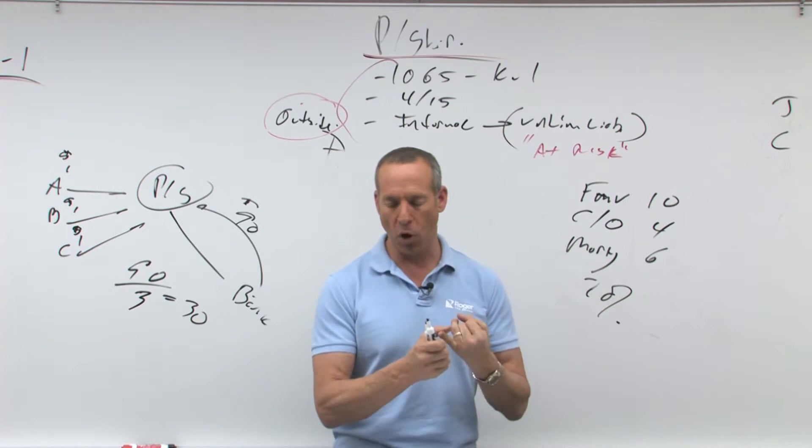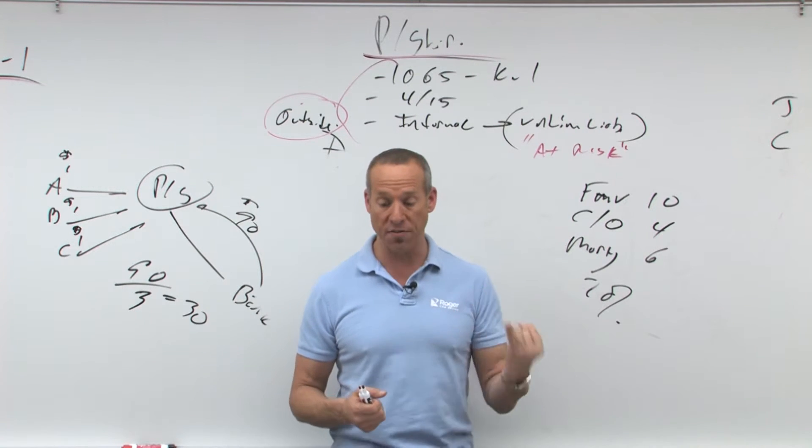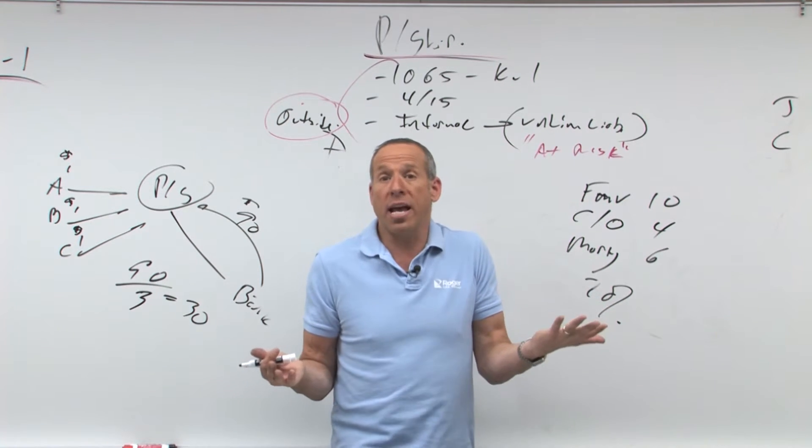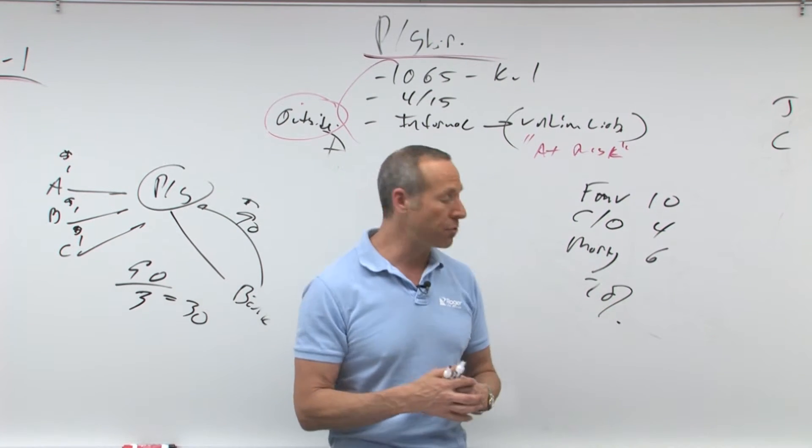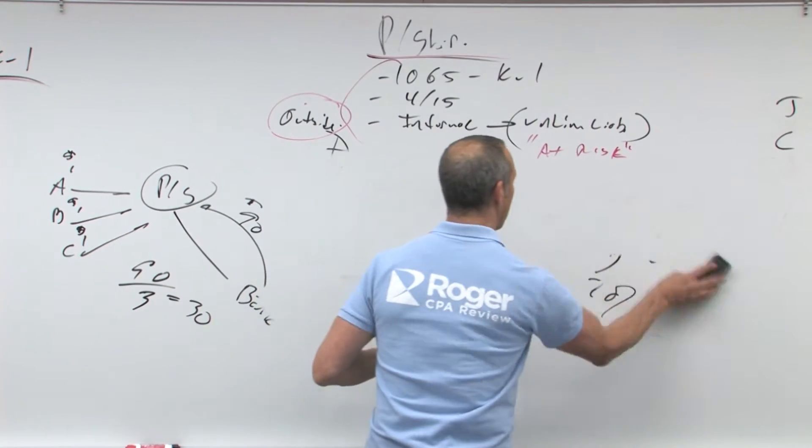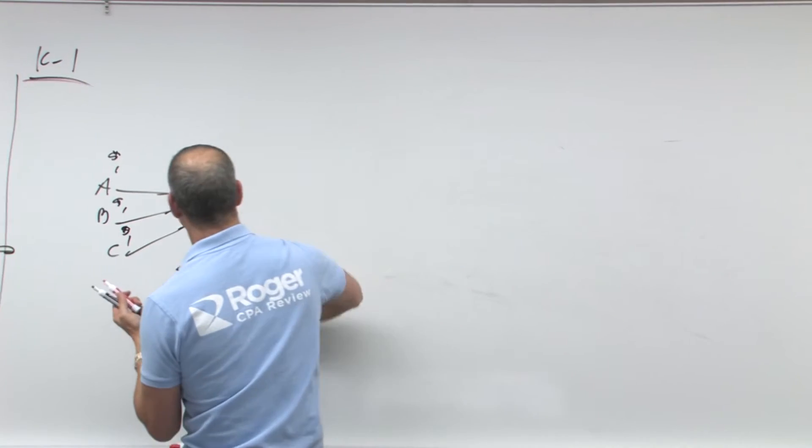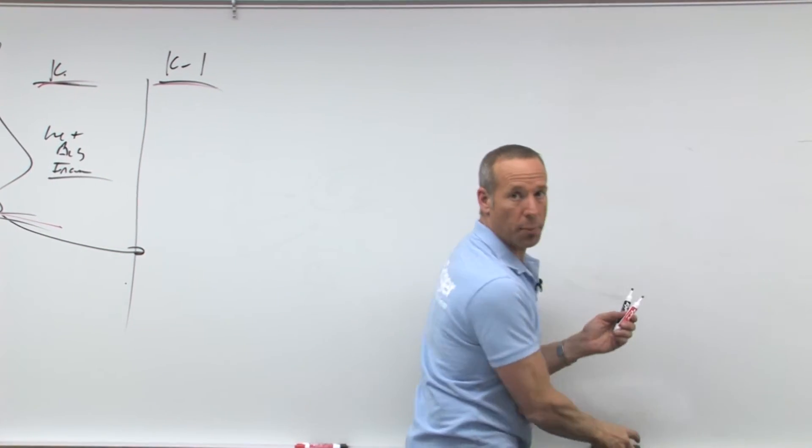So a couple of questions. First of all, what is the basis in the received asset? What does it do to my outside basis, and does it create income? Do I have some sort of income that I have to recognize? Let's draw this picture that we did earlier, and we'll do it again, and then we'll go through a bunch of examples to illustrate what we're talking about.